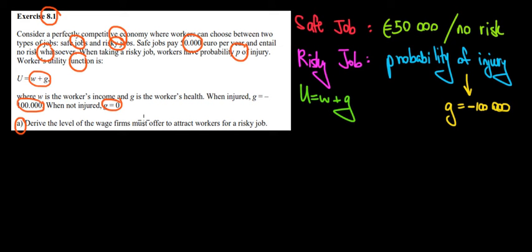In part A, what would be the wage that firms must offer to attract workers for a risky job? We saw that the risky job has a probability of injury that could lead to a loss of minus 100,000 euros, but we do not know the wage in that job. So we want to find out.